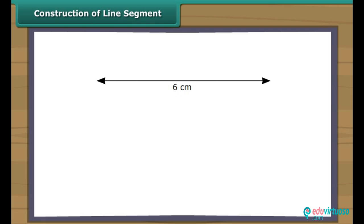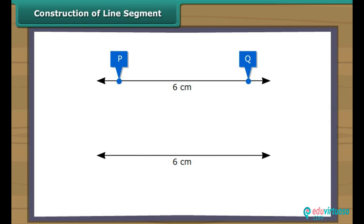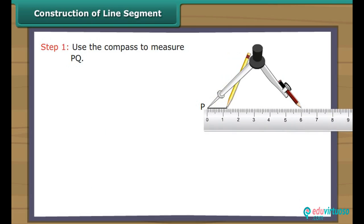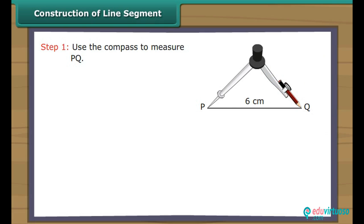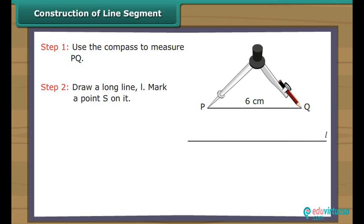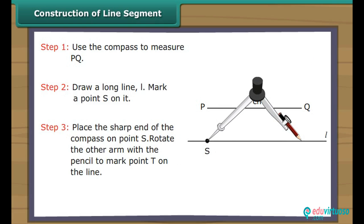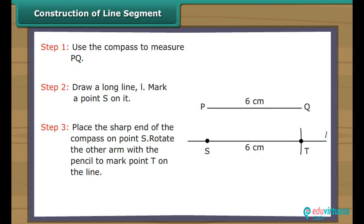Suppose a six centimetre long line segment PQ is given. We want to create another line segment ST of the same measurement. How do we do it without using a ruler? Use the compass to measure PQ. Draw a long line L. Mark a point S on it. Place the sharp end of the compass on point S. Rotate the other arm with the pencil to mark point T on the same line. We have a line segment ST which is a copy of the line segment PQ.